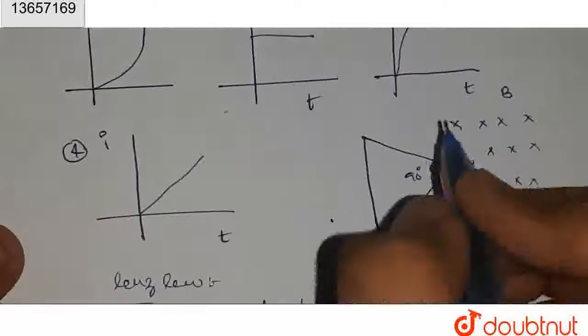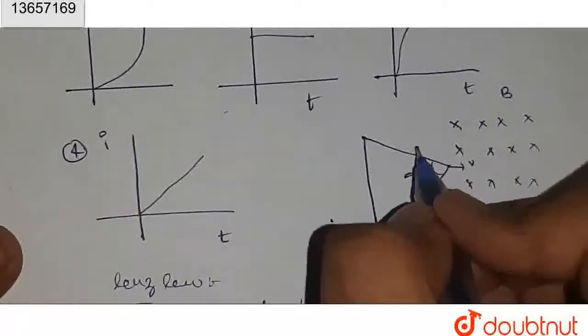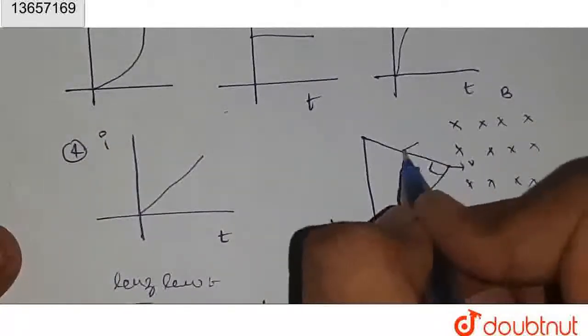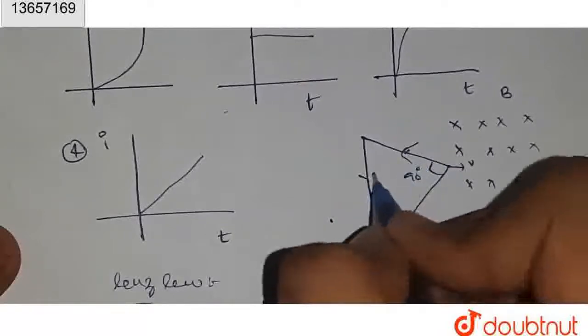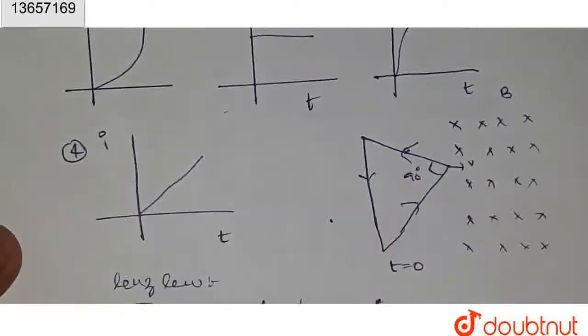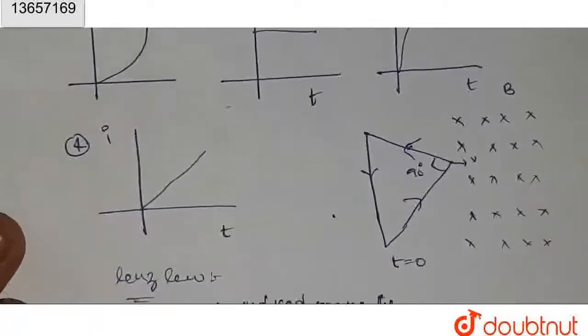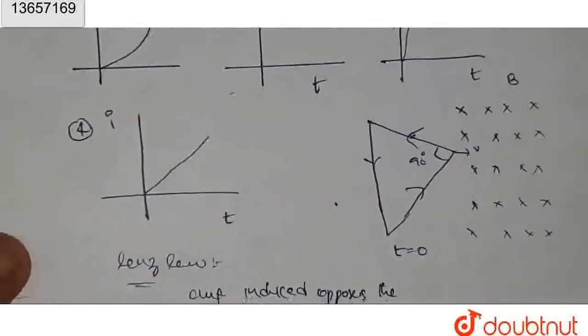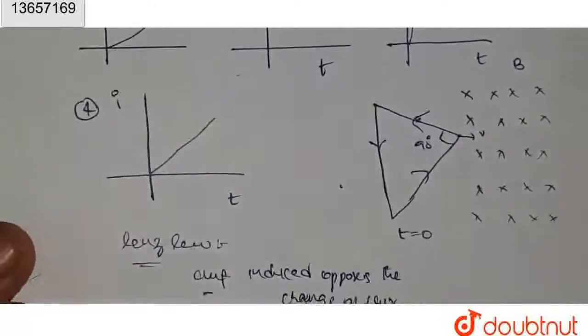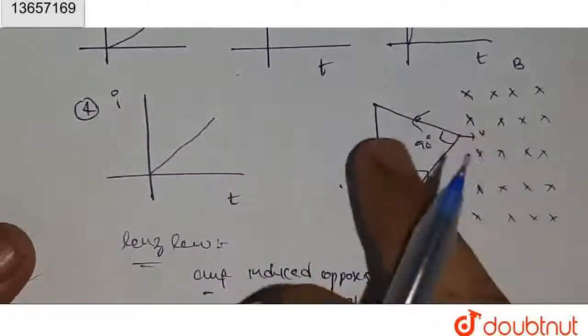the EMF induced opposes the change of flux. What this means is that in our loop, current will be induced such that it opposes the change of flux. This is the current direction.